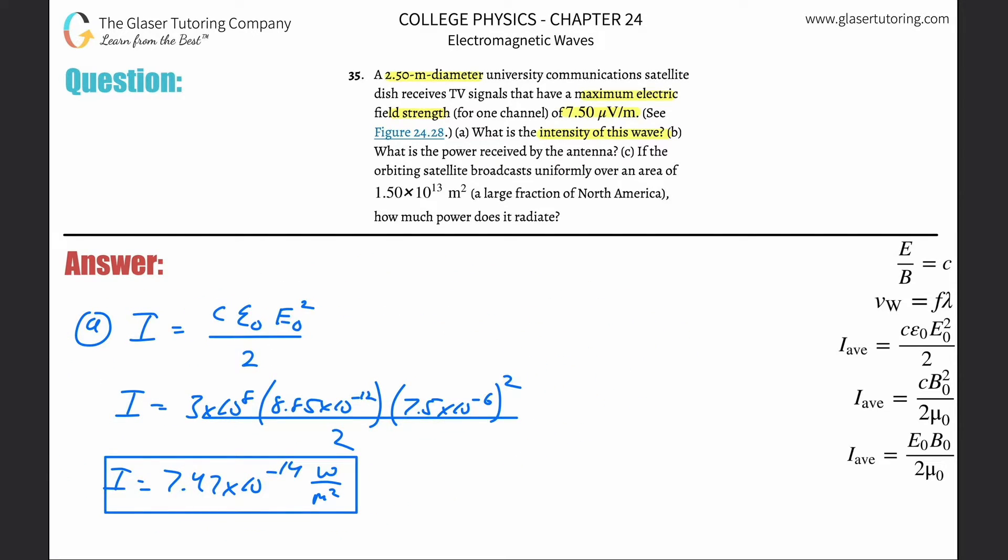What do we have coming up for letter b? What is the power received by the antenna? In order to find the power, we need the intensity, and then power is—or I should say intensity is equal to power over the area.